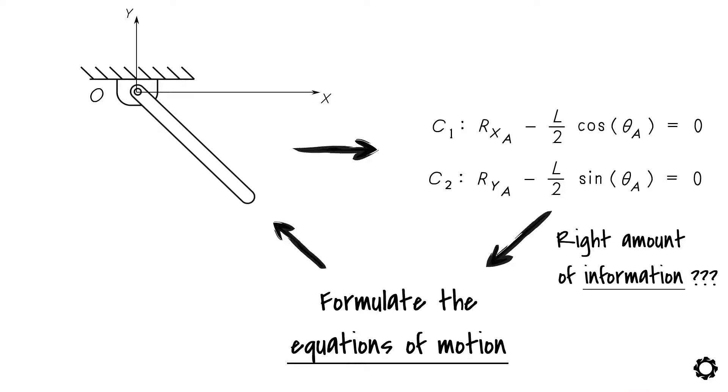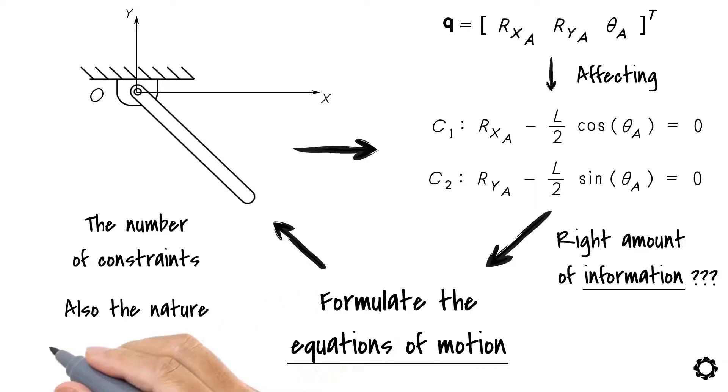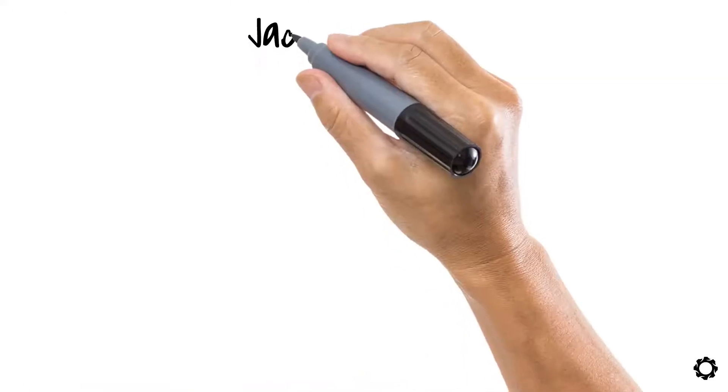Well, we need to also convey the information of which generalized coordinates these constraints are affecting. This means that we not only need to specify the number of constraints in the system, but also the nature of their restriction. To accomplish this, we use the Jacobian matrix.